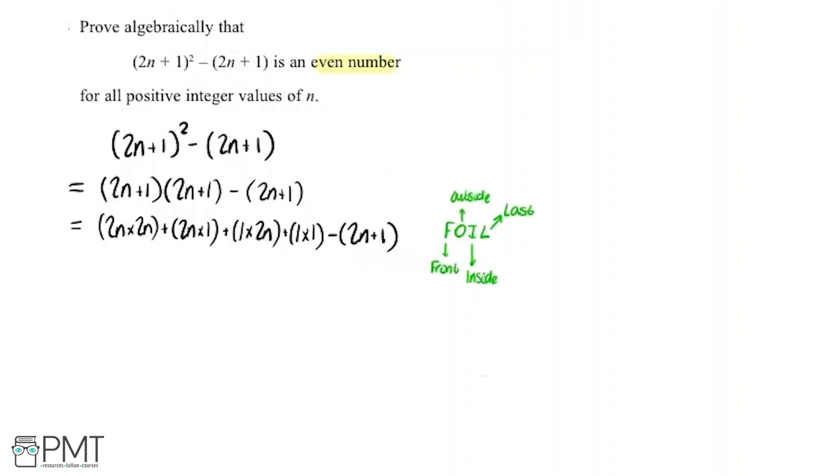Brilliant. So now I'm going to tidy this up a bit. So this bracket, 2n multiplied by 2n is 4n². So the 2 times 2 is 4, n times n is n². So in this bracket we've got 2n and this bracket we've got 2n and we're adding them together. So that's going to give us 4n and this final bracket is 1 times 1. So it's going to be 1.